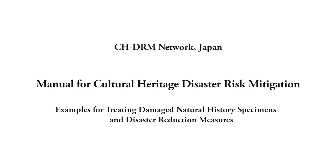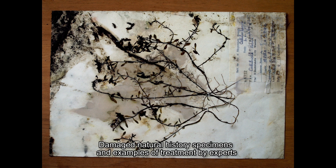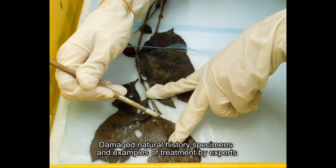Manual for Cultural Heritage Disaster Risk Mitigation: Examples for Treating Damaged Natural History Specimens and Disaster Reduction Measures. This video shows examples of how damaged specimens are treated by experts, and introduces disaster reduction measures to minimize damage to the specimens.